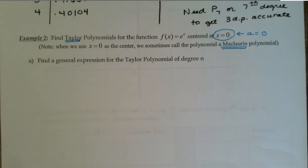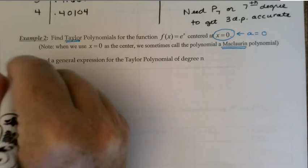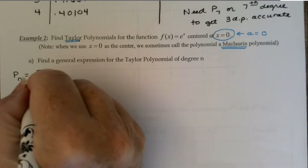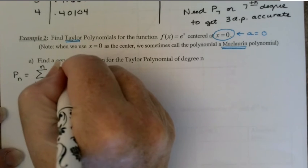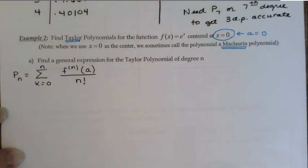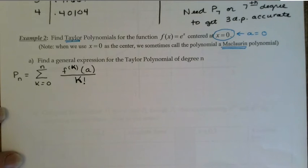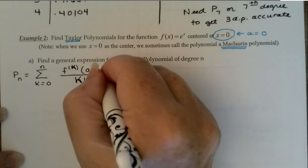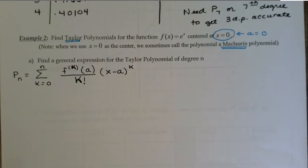The general expression for the Taylor polynomial of degree n: in order to calculate a Taylor polynomial, our general formula is p_n equals the sum as k goes from 0 to n of the kth derivative evaluated at a, divided by k factorial, times (x minus a) to the k power. Anytime you want a Taylor polynomial, you're always going to start with that general formula.